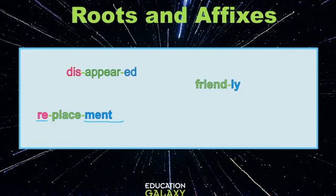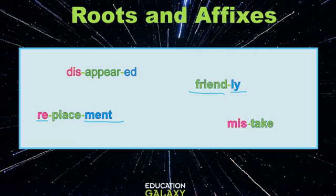Moving on, we have friendly. In this word we have the root word and a suffix at the end. -ly, when added to a noun, turns the word into an adjective, so friendly means like a friend. Another word we have here is mistake. This word has a root and a prefix, so mistake means to be wrong about something.